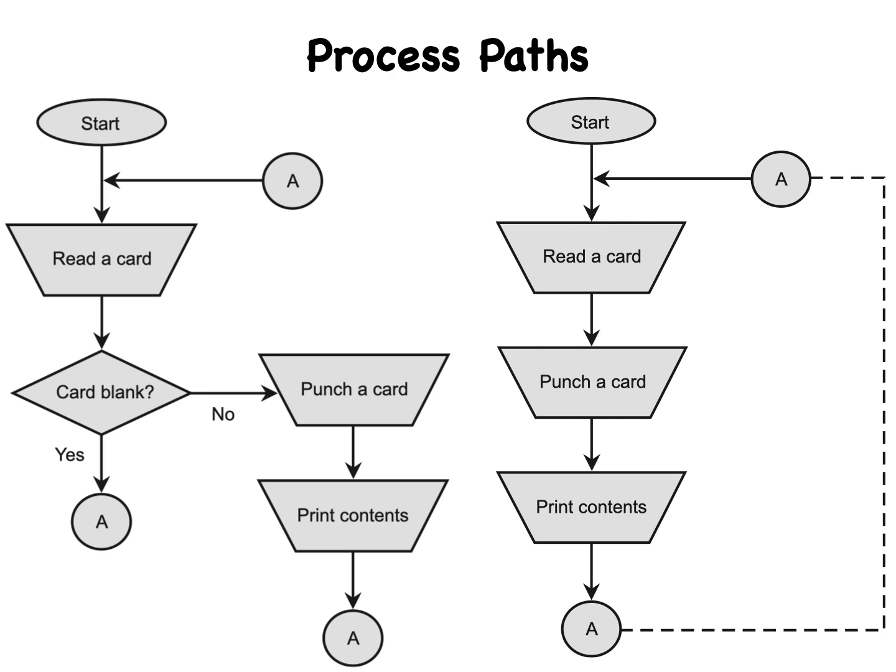The program begins in the start oval at the top and then goes to the block marked read a card. From there, the program moves on to the decision block labeled card blank. If the answer is yes, the program proceeds to the connection circle marked A and back to the top to read the next card.